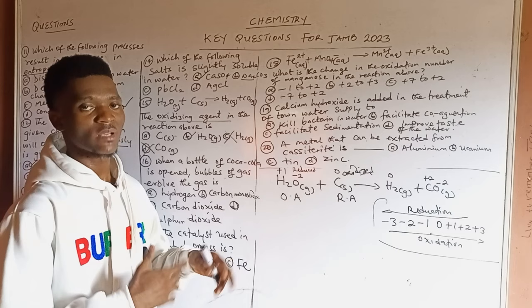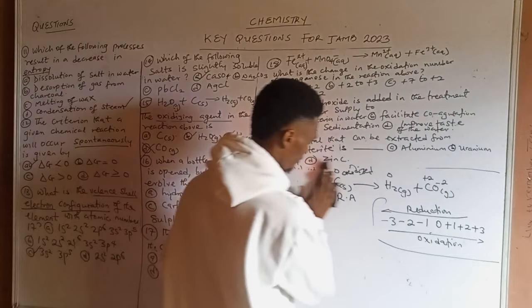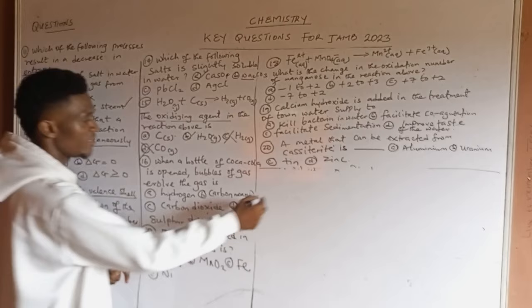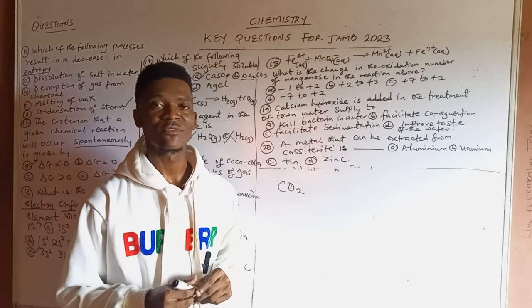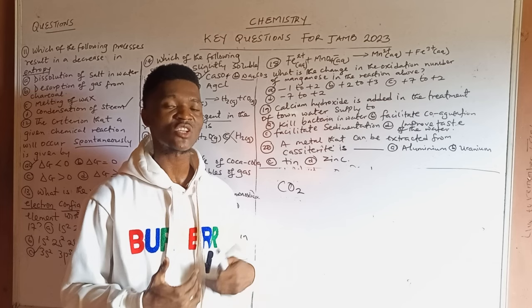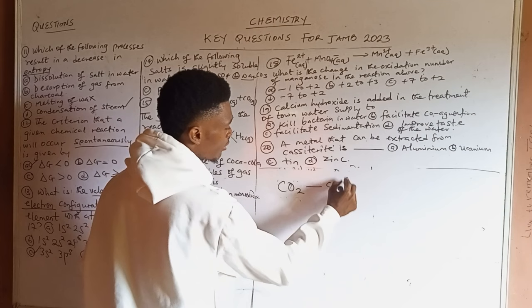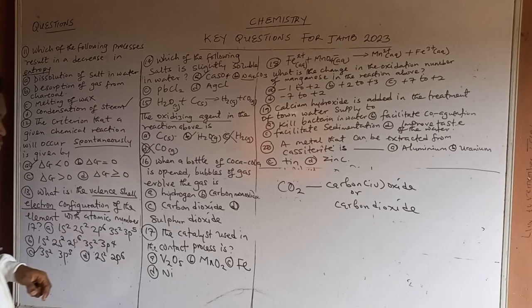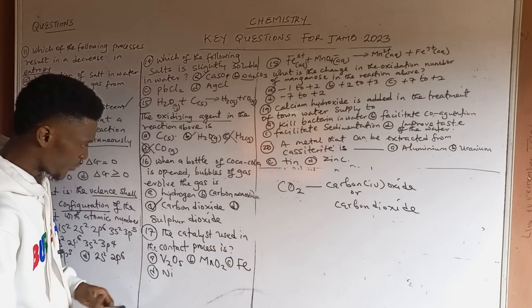So the oxidizing agent in the reaction is water (H2O). If you have further questions, you can place them in the comment section. Moving to question 16: when a bottle of carbonated drink is opened, bubbles of gas evolve — the gas is obviously CO2 (carbon dioxide). CO2 is used in the making of soft drinks, giving them their sharp, refreshing taste. The answer is C, CO2.